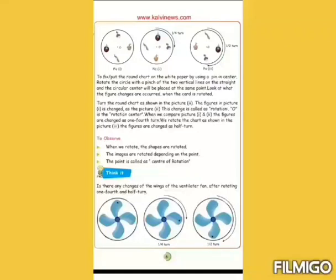O is called center of rotation. Now, we compare picture 1st and 2nd. The figures are changed as 1 4th turn. Again, we rotate the circle chart as shown in the picture 3rd. The figures are changed as half turn. This is called rotation. The first picture is 1 by 4th turn. That means quarter turn. The second picture is turn again 1 by 4th turn. So, totally 1 by 2th turn or half turn.